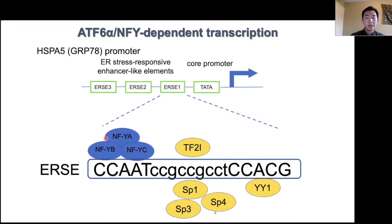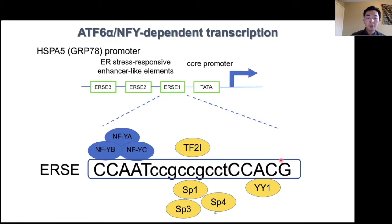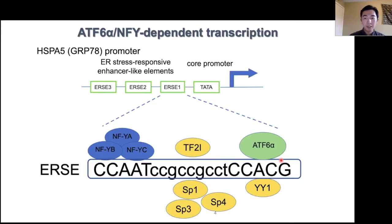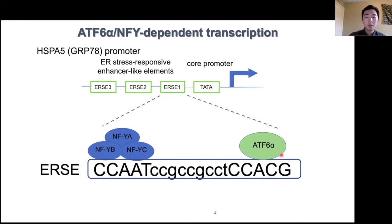A canonical ERSE is a 19 base pair motif, usually starting with a CCAAT CAT box that can be bound by NFY, a heterotrimer transcription factor. There's also a 9 base pair high GC region that can be bound by TF2I and SP family proteins. The CCACG motif can be shared by YY1 and the master regulator in this case, ATF6-alpha. ATF6 is an ER membrane protein that can only be present in the nucleus upon ER stress and protein cleavage, and ATF6 binding to the ERSE requires NFY. Today I'm going to ask you to focus on two key players: ATF6 and NFY.